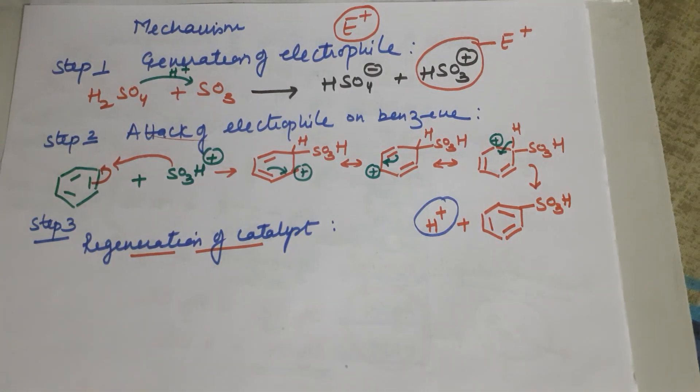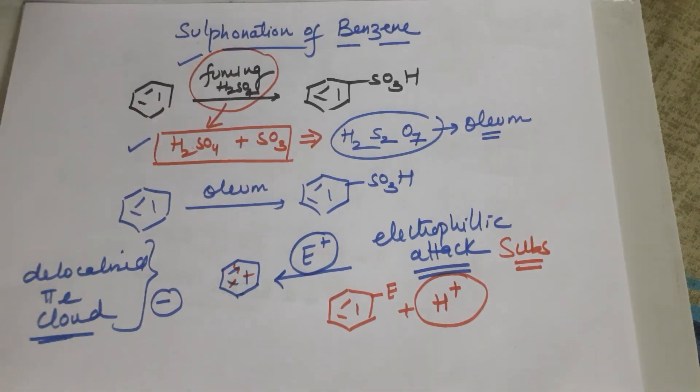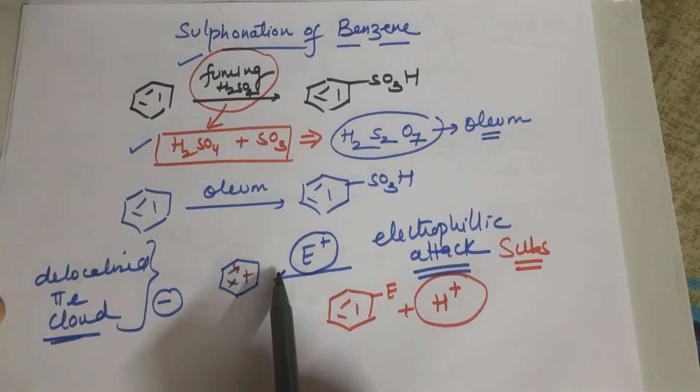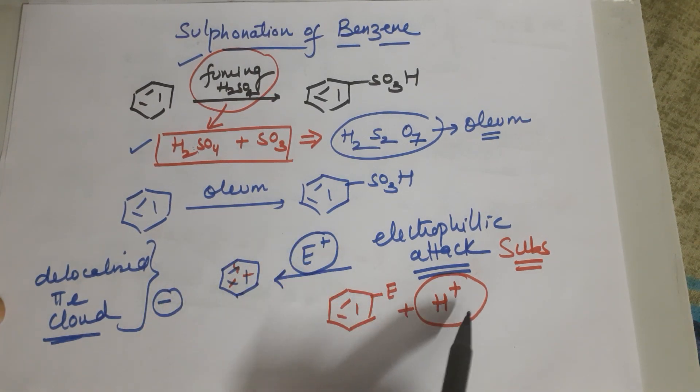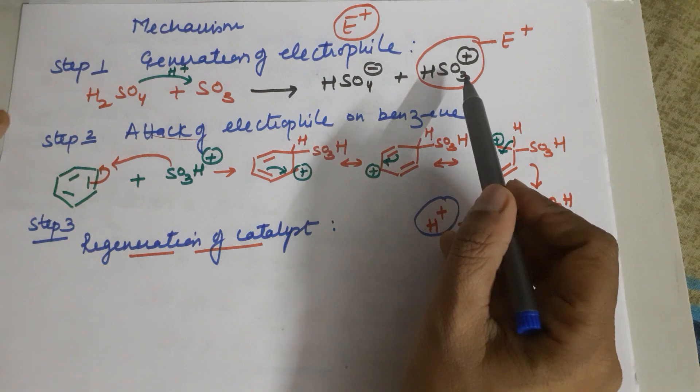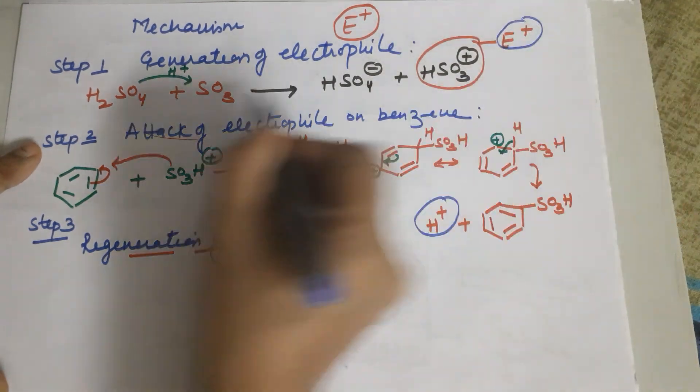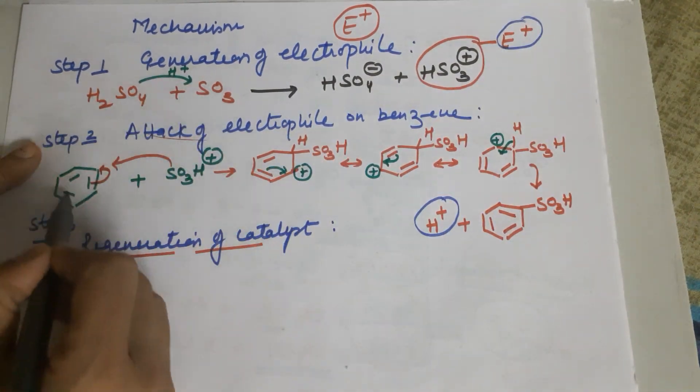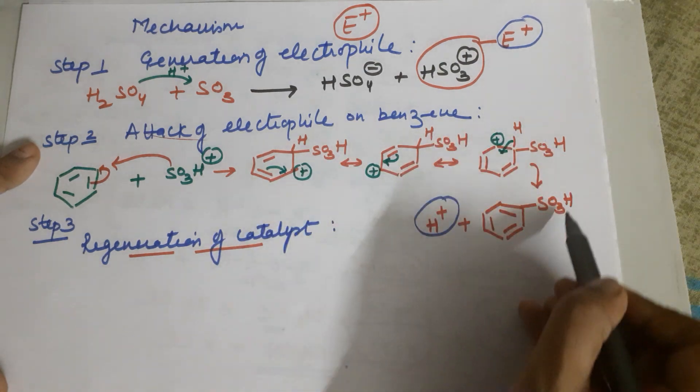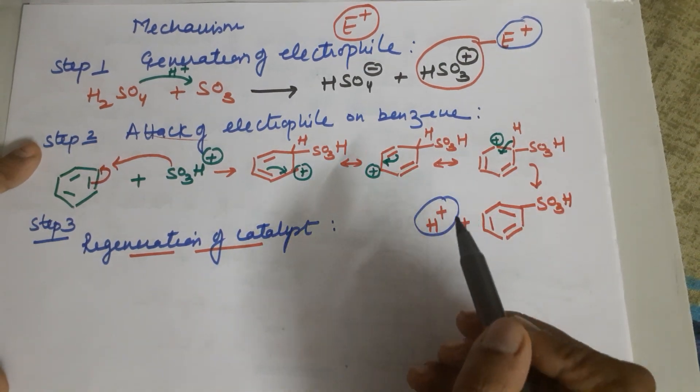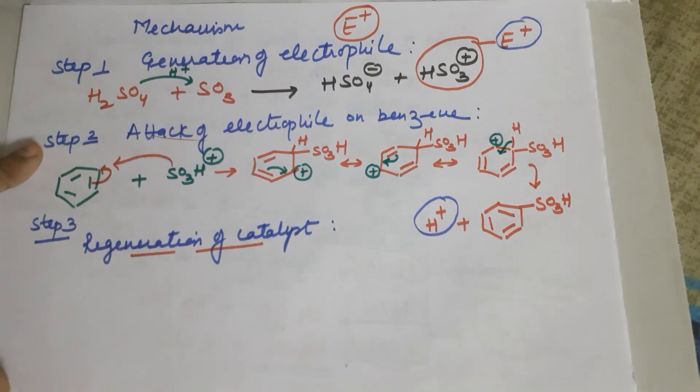I had just explained that when benzene is attacked, H+ will always be released. This is exactly what is happening. First step we have electrophile generated by the fuming sulfuric acid. Second step we have attack by the electrophile and loss of the proton.